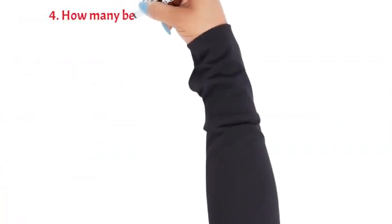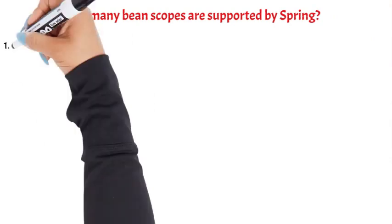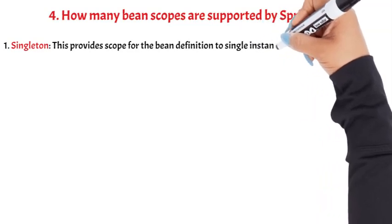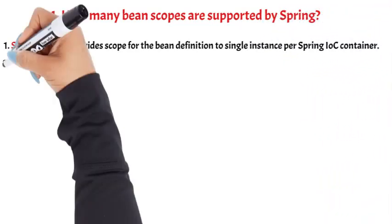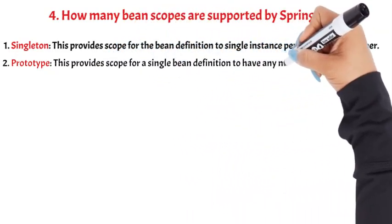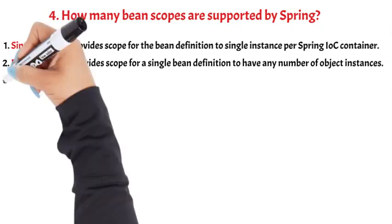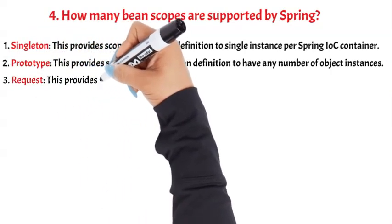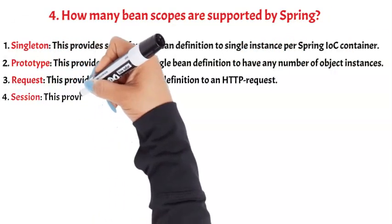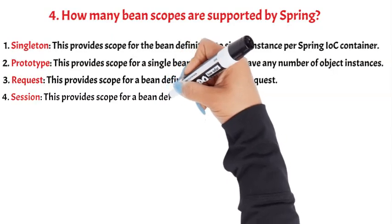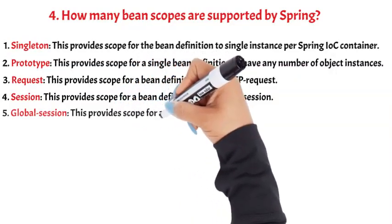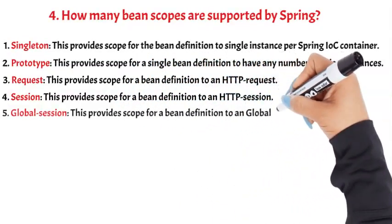Question 4: How many bean scopes are supported by Spring? 1. Singleton: provides scope for the bean definition to a single instance per Spring IoC container. 2. Prototype: provides scope for a single bean definition to have any number of object instances. 3. Request: provides scope for a bean definition to an HTTP request. 4. Session: provides scope for a bean definition to an HTTP session. 5. Global Session: provides scope for a bean definition to a global HTTP session.